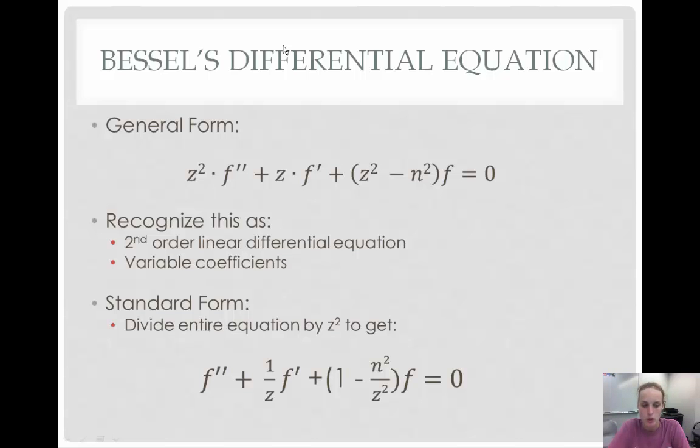Sometimes we need to work with this equation in standard form. In order to do that, we divide the entire equation by z squared so that we have a coefficient of one in front of f double prime. That gives us f double prime plus one over z times f prime plus the quantity of one minus n squared over z squared times f equals zero. We will be working with both of these forms throughout this presentation.